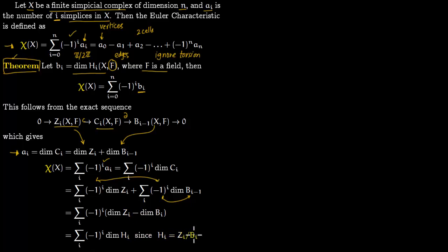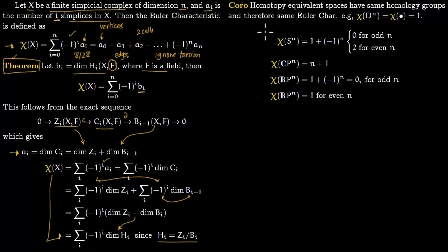Homology is the kernel over B_i. If you want to compute homology it is always kernel over what is in B_i, and that gives you the dimension of H_i. That is what we wanted to prove: the Euler characteristic equals the sum of (-1)^i * b_i where b_i = dim(H_i). The corollary is that homotopy equivalent spaces have the same homology groups, and since Euler characteristic is just the alternating sum of dimensions of homology groups, they have the same Euler characteristic. For example, the disk contracts to a point, so the Euler characteristic of the disk equals that of a point, which is just 1.